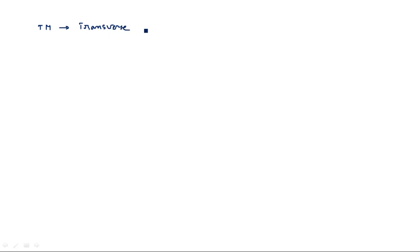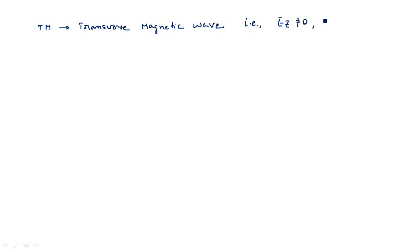So what is a TM wave? TM wave is nothing but a transverse magnetic wave. The wave exists which is perpendicular to the magnetic field — that means the electric field exists and the magnetic field is equal to zero. If the direction of propagation is Z, then Ez is not equal to zero and Hz is equal to zero. This is what the TM wave stands for.